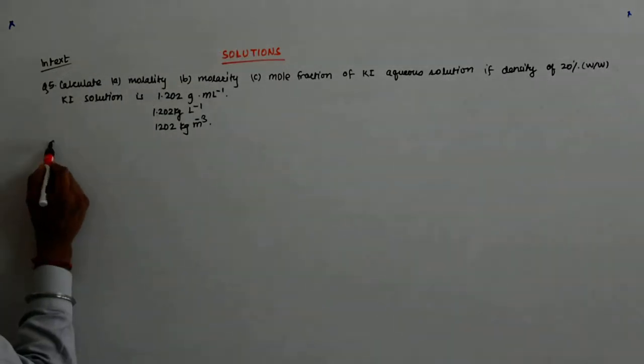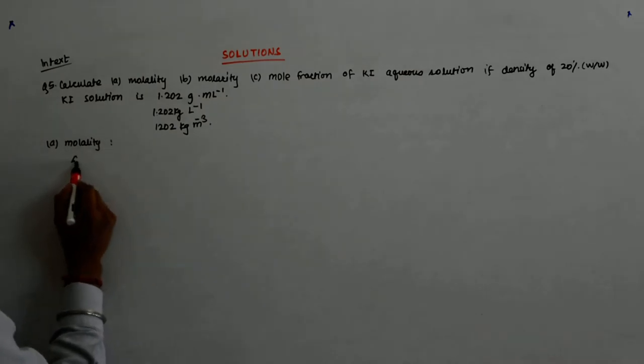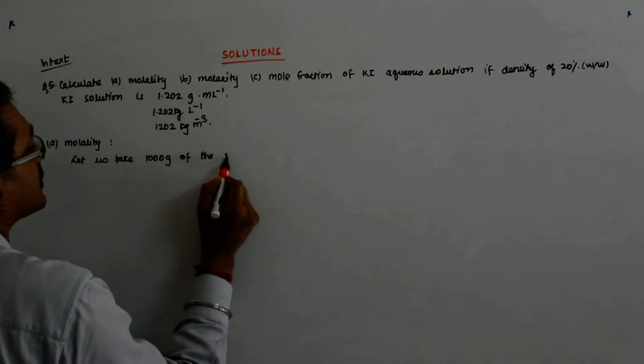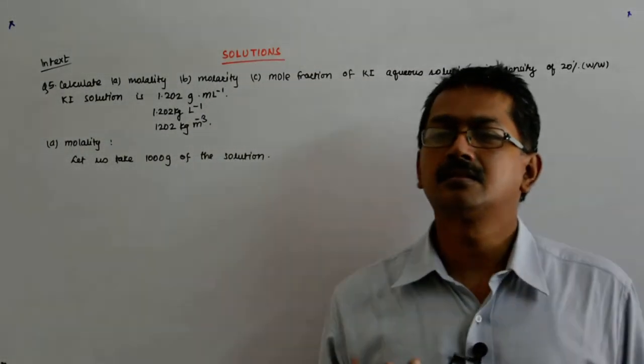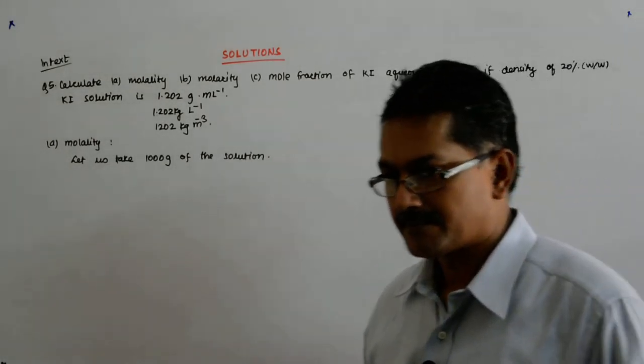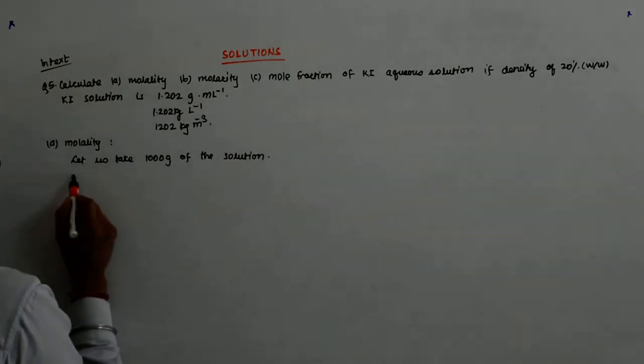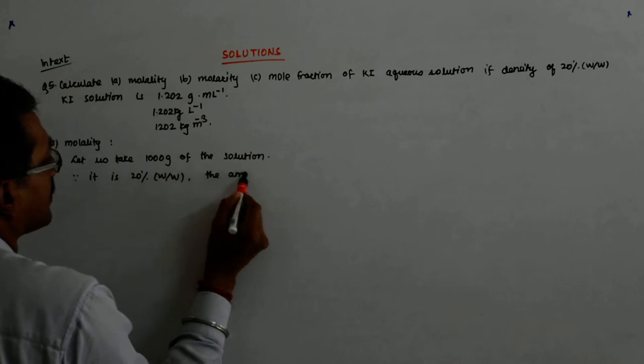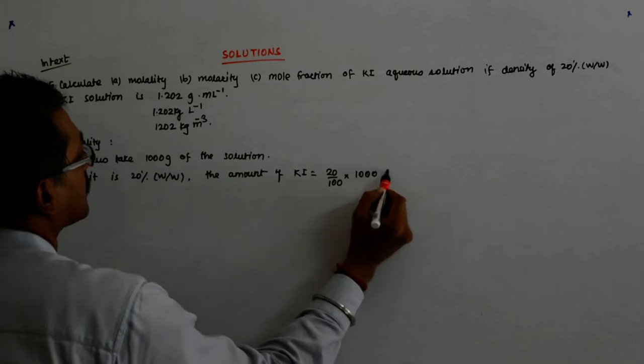Now, I am supposed to find out the molality. So let us take 1000 grams of the solution. Now what have we said? We say that this is 20% mass upon mass. So out of this 20% is the amount of KI.